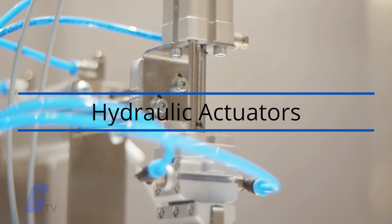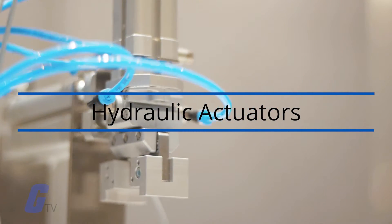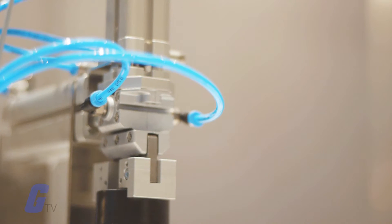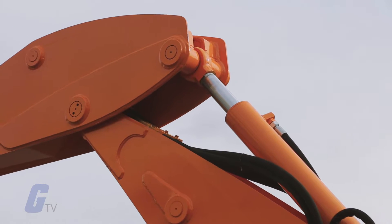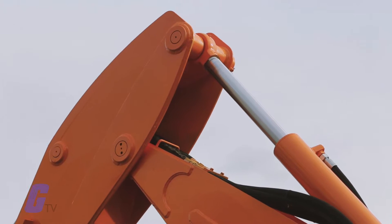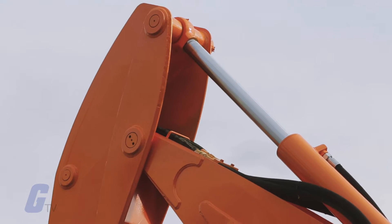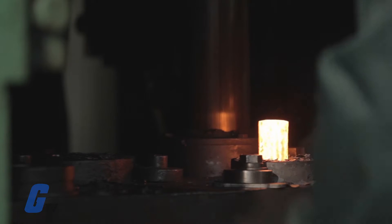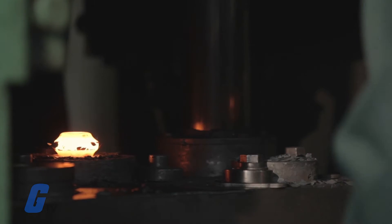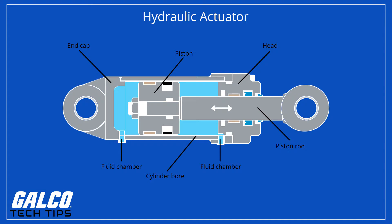Hydraulic actuators, as used in industrial process control, employ hydraulic pressure to drive an output member. These are used where high speed and large forces are required. The fluid used in hydraulic actuators is highly incompressible, so that pressure applied can be transmitted instantaneously to the member attached to it. A hydraulic actuator consists of a cylinder or fluid motor that uses hydraulic power to facilitate mechanical operation.